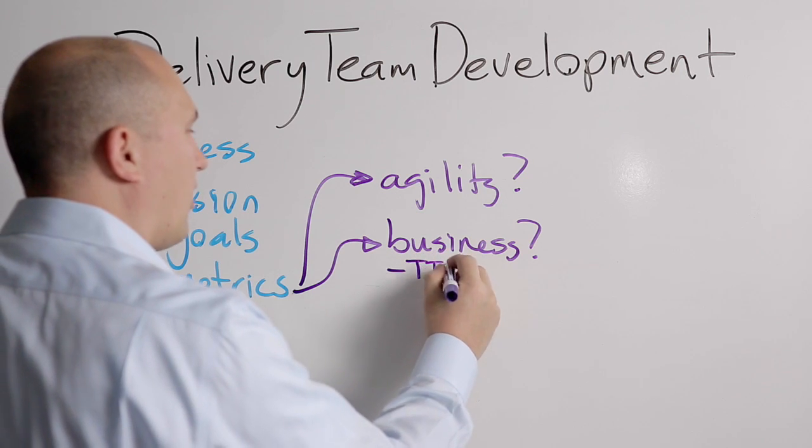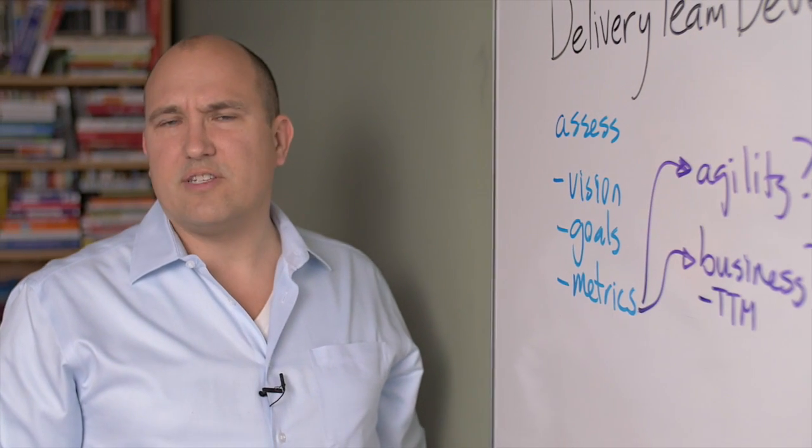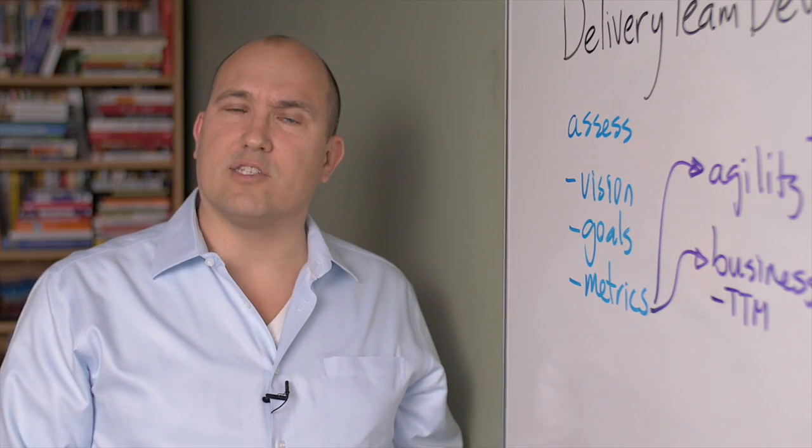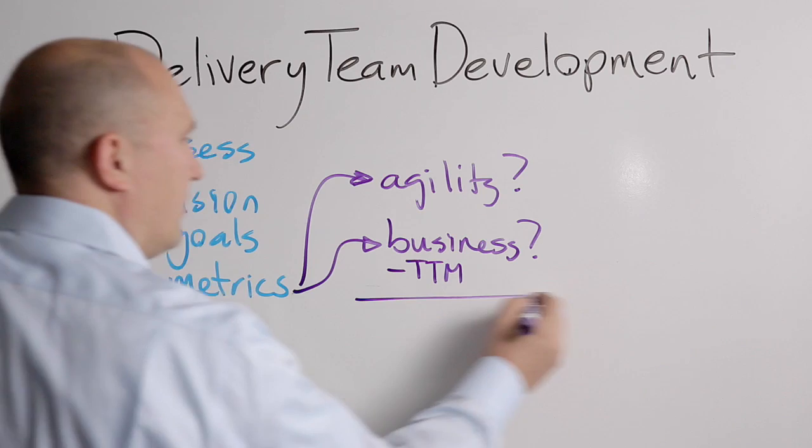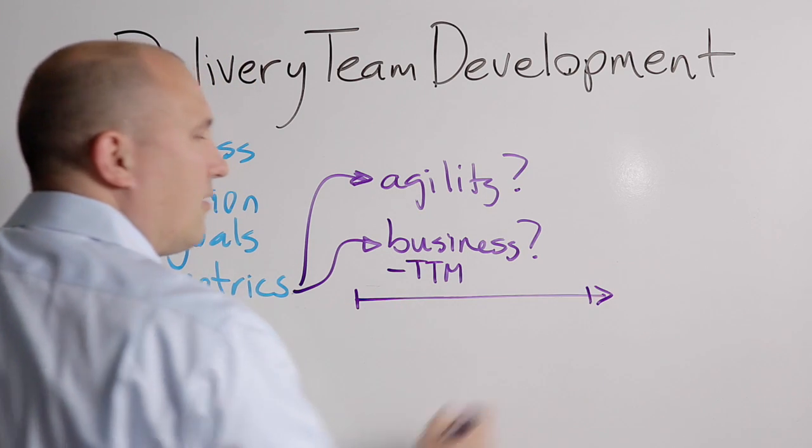So for example time to market is actually fairly simple. You measure when a team is requested to do something and then when they actually deliver on that. That time on average should be shorter and shorter.